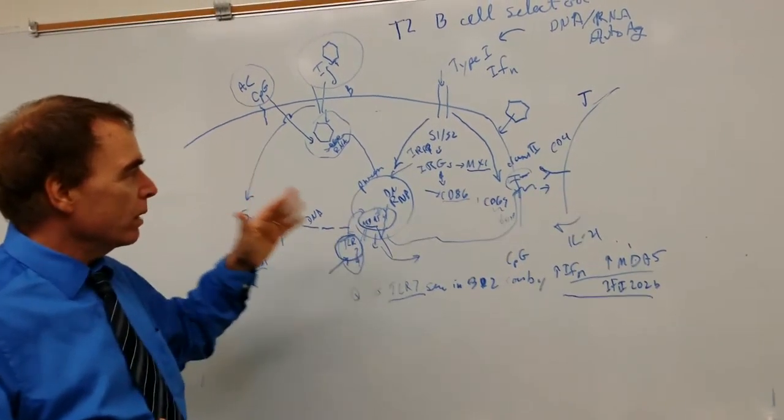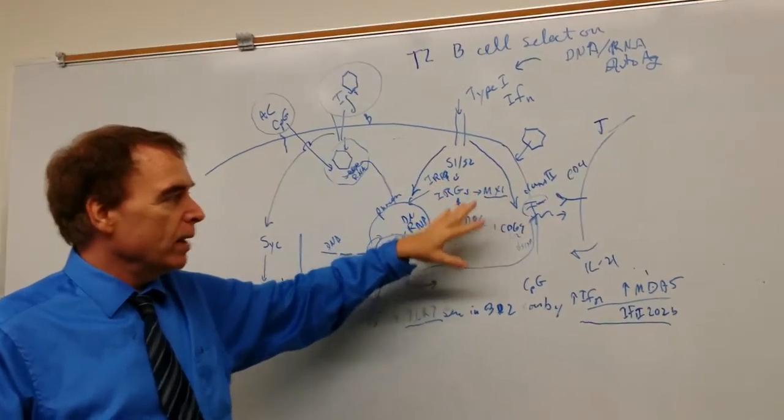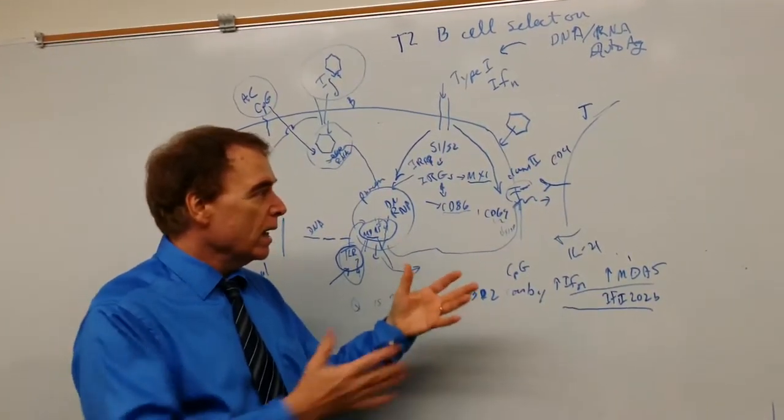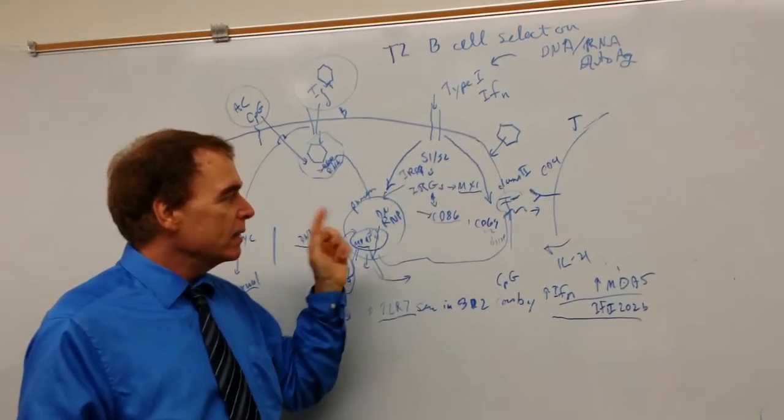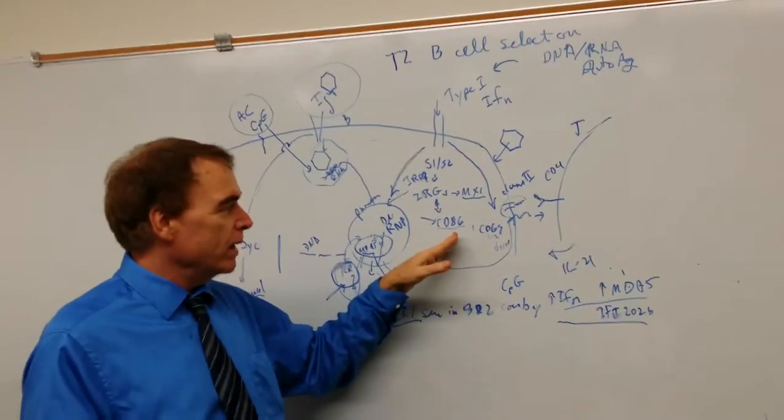How does that work? We've known for a long time that one thing type 1 interferon does on B-cells, and we showed it on T2 specifically, is that T2 and some of the transitional stages are very sensitive to this.